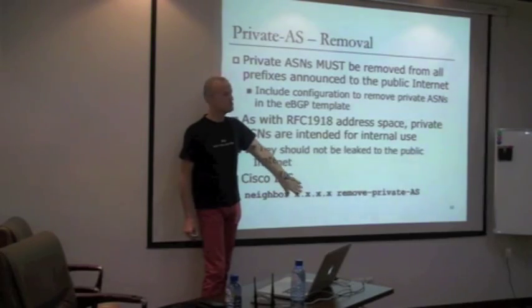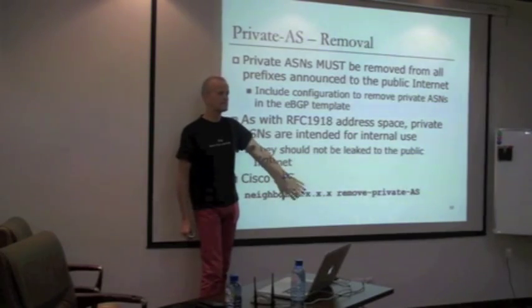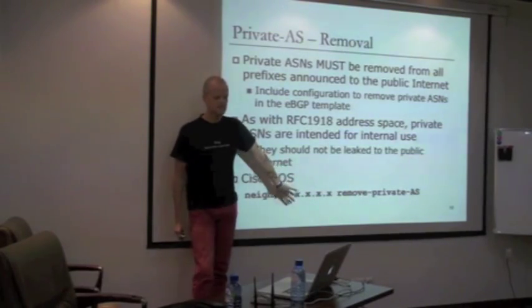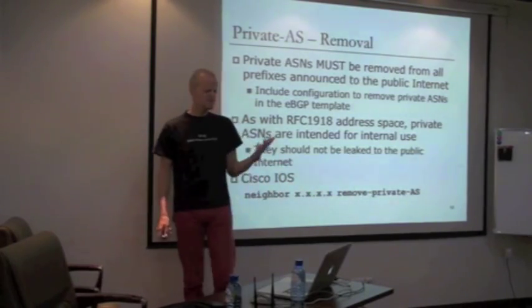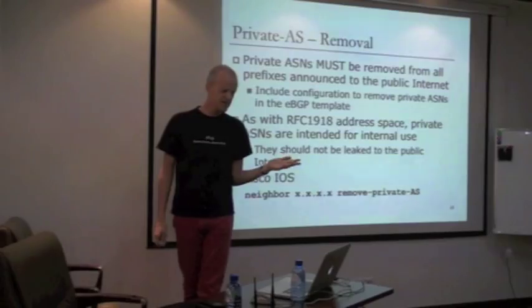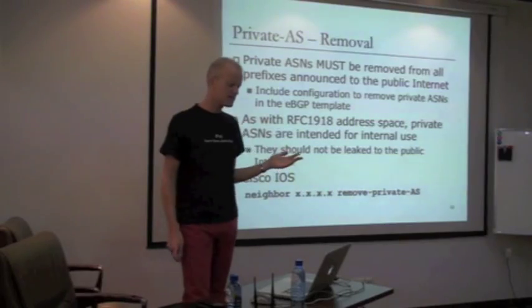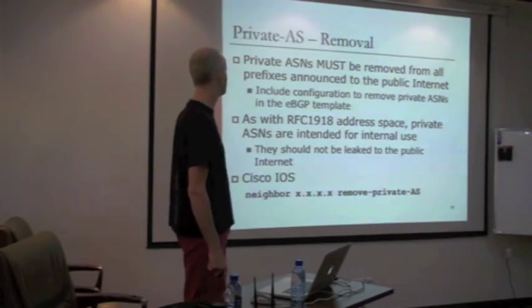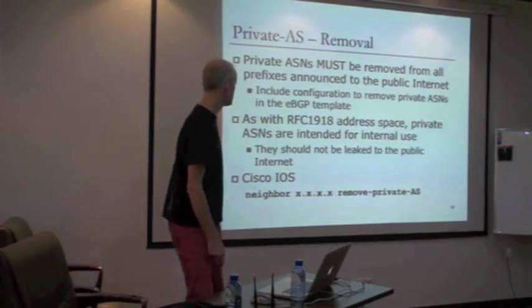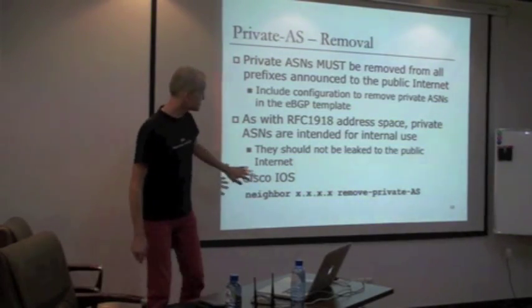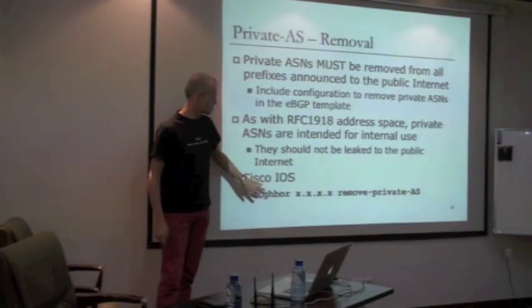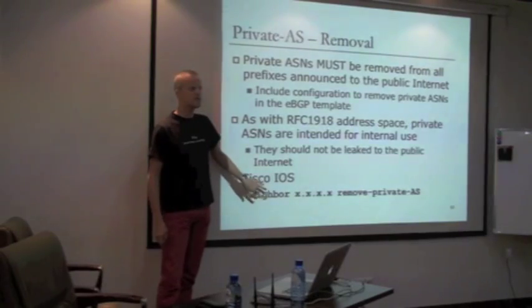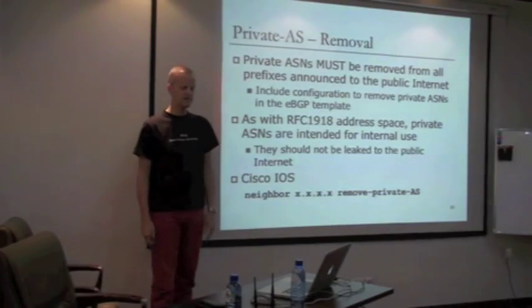You won't get a public AS number from APNIC if a customer is multihoming onto your backbone - only when they connect to different ISPs, different networks, will they get a public AS number. So just add 'neighbor remove-private-AS' into your EBGP template. Don't forget to do this on the EBGP sessions.